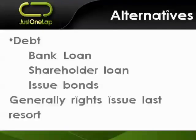Why is a loan preferred? Because if you take a loan or issue a bond, you ultimately pay it back — so it's a short-term issue. If you issue new shares — in other words, you had 100 shares and now there are 150 shares in the market — you've given them away forever. You're going to pay dividends on those shares forever. That's one of the drawbacks of a rights issue: you pay for it forever, every day. Generally, if a company can borrow money in other ways, they would go that route.